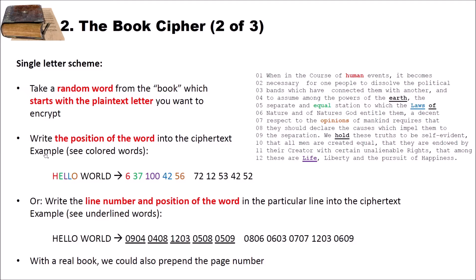Then we have another way of encrypting using the same document. And that is write the line number and position of the word in the particular line in the ciphertext. Again, we want to encrypt hello world. We first need to encrypt the h. We search for a word that starts with h, for instance the word hold here. This is in the 9th line. So we first write 09. And then this is the 1, 2, 3, 4th word of the line. And we write 04. Same we do for instance with the e. We search for a word that starts with an e. In this case it's earth. Earth is in the 4th line of the text. So we write 04. And it's the 8th word. So we write 08. And we continue doing so until we have encrypted the complete text.